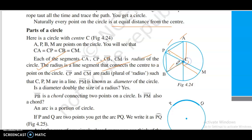CP and CM are radii. That is CM is known as the diameter of the circle. The diameter is twice the size of the radius. It connects two points on the circle.